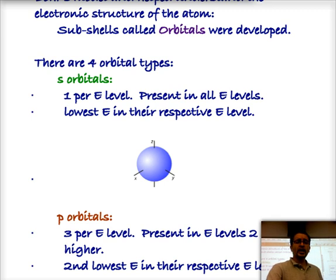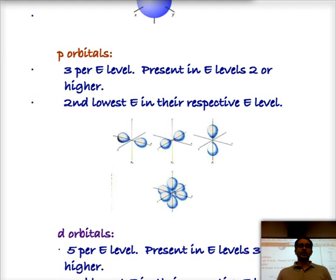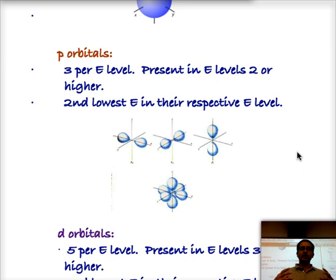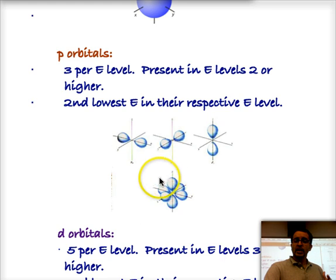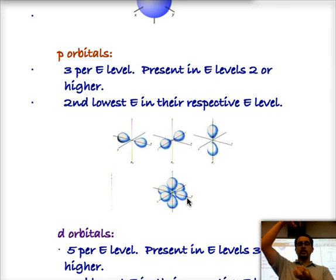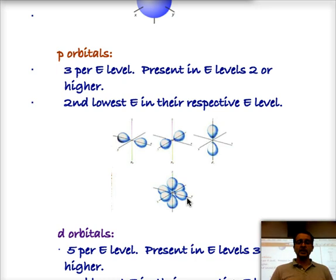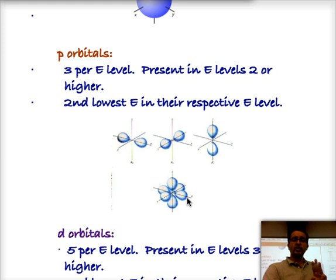The second type of orbital is the P orbital. P orbitals have an interesting shape — they're shaped basically like a figure eight. There are three P orbitals per energy level, and those are present in energy levels two or higher. They are ever so slightly higher in energy than the S orbitals, making them the second lowest in energy. If you put all three P orbitals together it looks like a flower shape. Any energy level that has P orbitals always has three — you buy one, you get three, regardless of how many are occupied.